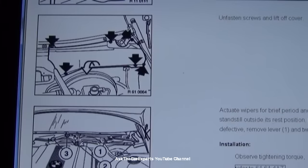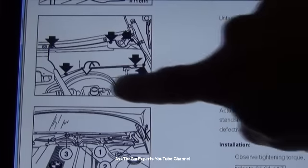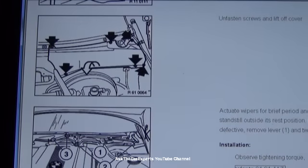Now to access that connector you do have to take this cover off. This right here is the brake booster, so that cover is actually going to be right above the brake booster. It's held on by some screws. This is with the wiper arms removed.